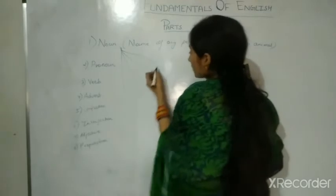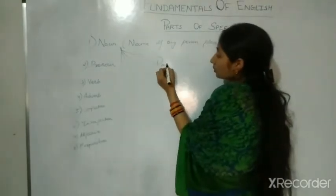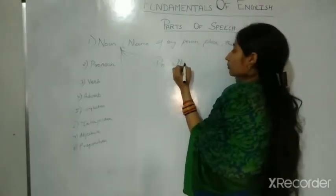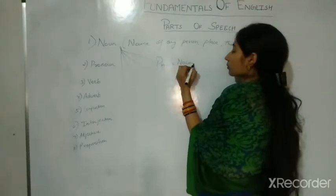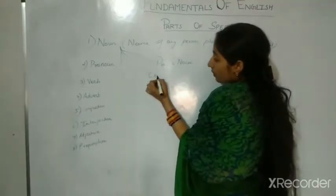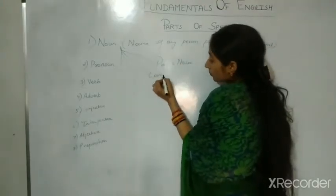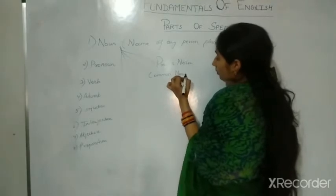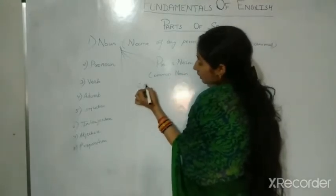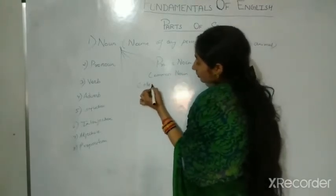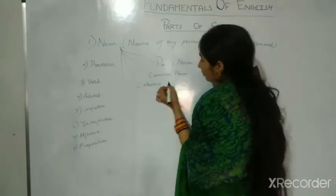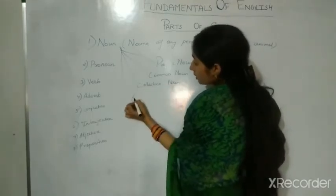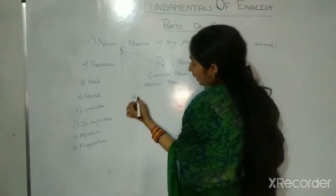The four types of noun are: first is proper noun, second is common noun, third is collective noun, and the fourth one is abstract noun.